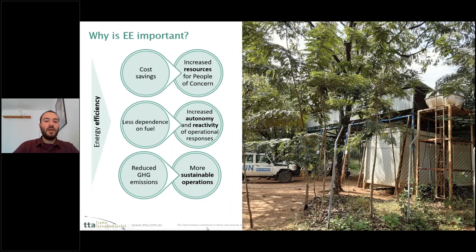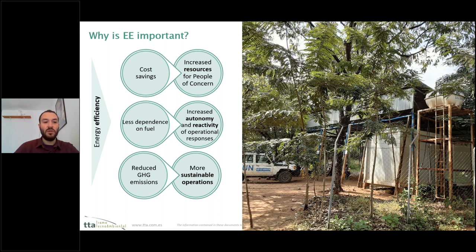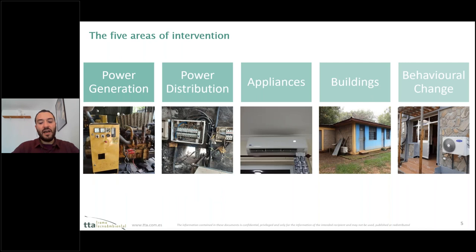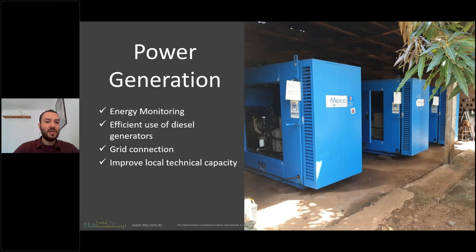Why is energy efficiency so important? Cost savings translate into increased resources for people of concern. Less dependence on fuel increases autonomy and reactivity of operations on the ground, and greening operations makes them more sustainable. The five areas of intervention are power generation, distribution, appliances, buildings, and behavioural change.